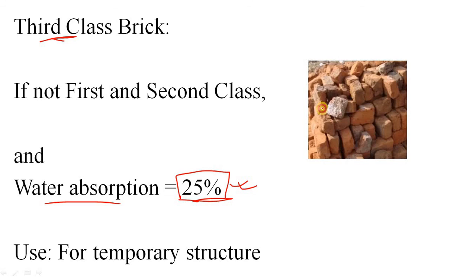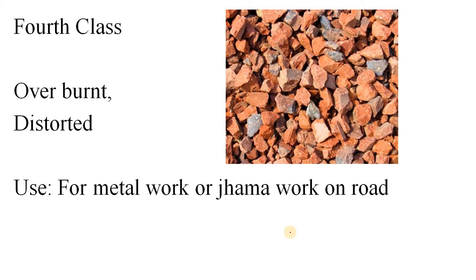The last one is fourth class brick. When you are burning the clay, what happens? Sometimes some bricks are overburnt, sometimes some bricks are underburnt. So in case of overburnt bricks, they are distorted, and they cannot be classified as first class, second class, or third class. So these are classified under fourth class brick. All the overburnt and distorted bricks are fourth class brick.